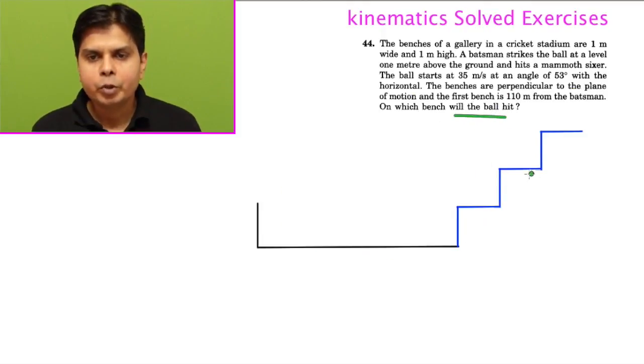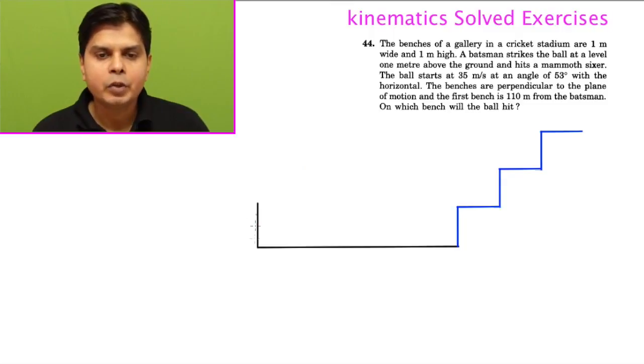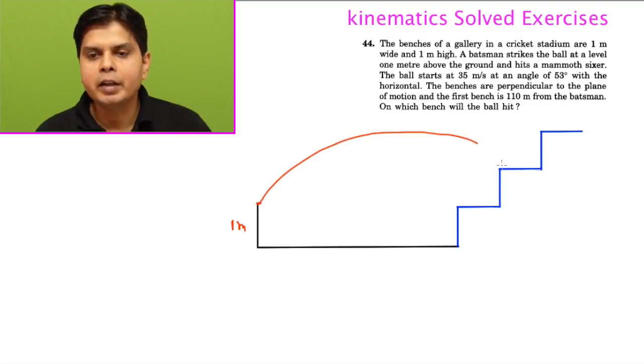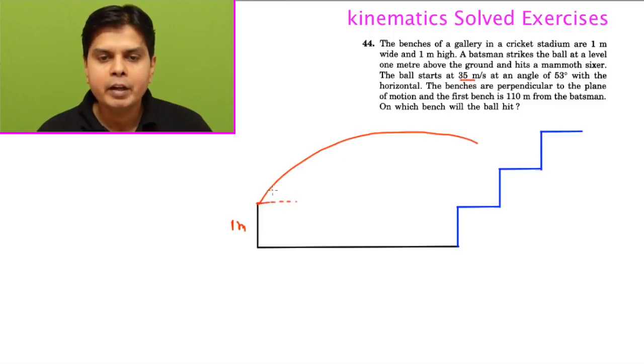This question's diagram is not in the book, so let me draw it. This is a cricket stadium, and what I've shown in blue are the benches where people sit. The batsman is here, and the batsman has hit a sixer from here. The height is one meter - where the ball is hit by the bat and where the projectile motion starts is one meter high. From here the projectile motion will go and it will fall somewhere on some bench. The projectile motion velocity is given as 35 meters per second, and this angle is given as 53 degrees.